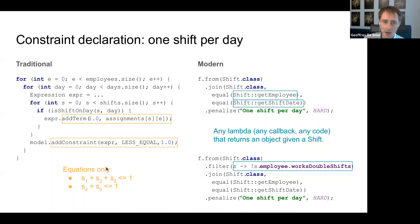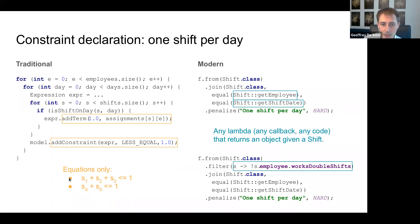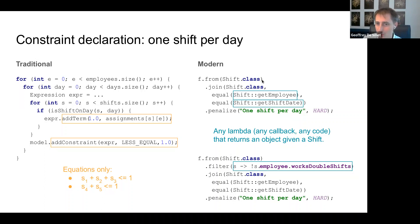On the left — the traditional side — you're writing mathematical equations like: sum of assignment booleans for shifts S1, S2, S3 for employee Ann must be less than or equal to one. On the right — the modern approach — these are lambdas. You can put any code inside them; for instance, a predicate saying 'only apply this constraint to employees who don't work double shifts,' making the constraint conditional without restructuring the equation.